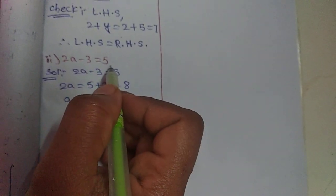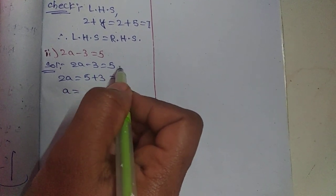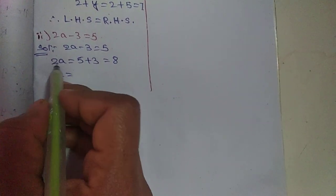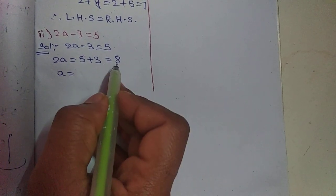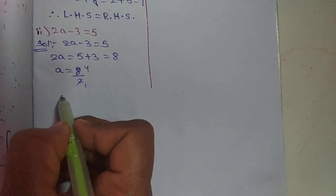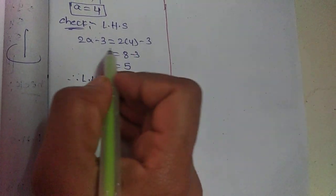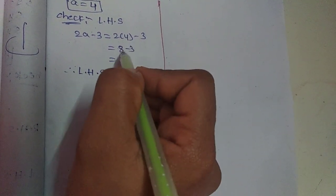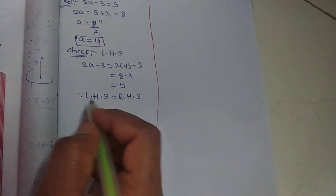Second one: 2A minus 3 is equal to 5. So minus 3 is transposed to the right side, giving 2A equals 5 plus 3, which is 8. So 2A equals 8, meaning A equals 4. Checking: substitute A equals 4 into 2A minus 3. 2 fours are 8, 8 minus 3 is 5. So LHS equals RHS.